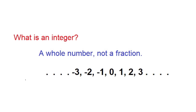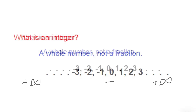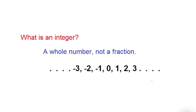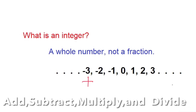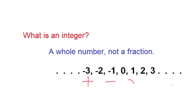So what is an integer? A whole number, not a fraction. It starts at negative infinity, includes zero, and goes to positive infinity. It's also important to know what operations go with what properties — and those operations are add, subtract, multiply, and divide.